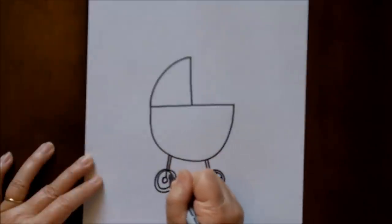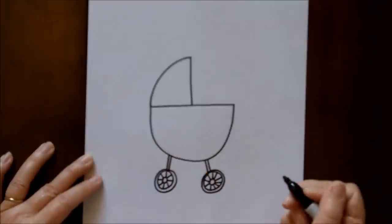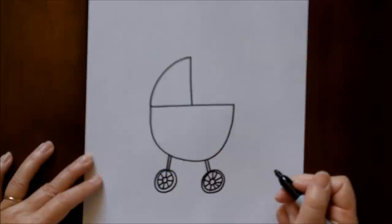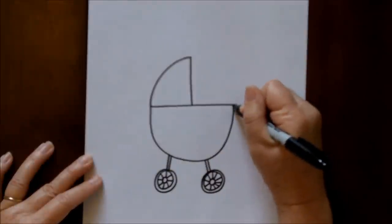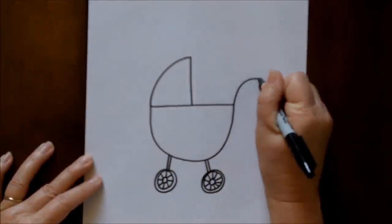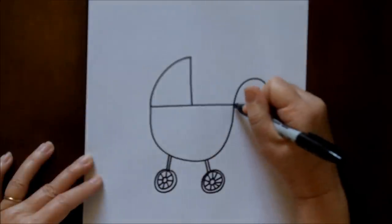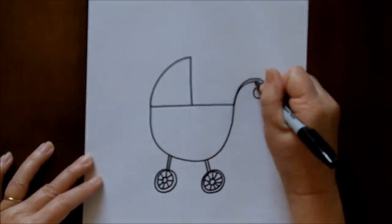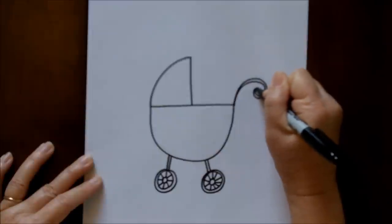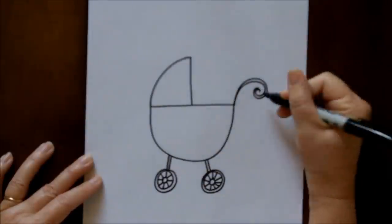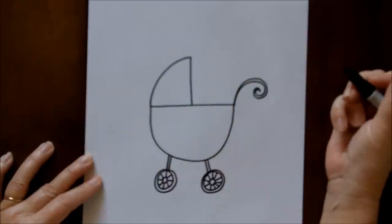Now let's go up to this side. This is going to be the area where the carriage is going to be pushed, so we're going to make a curvy handle and you're going to double that shape like a little spiral at the end.